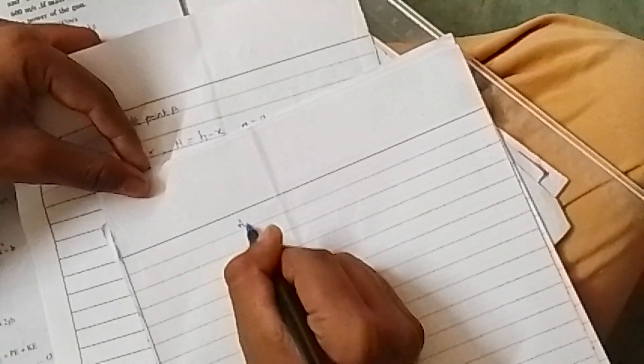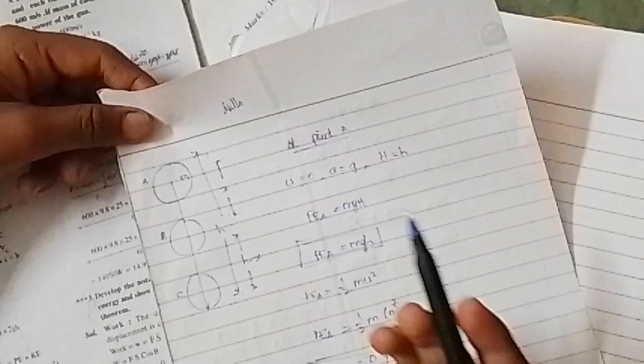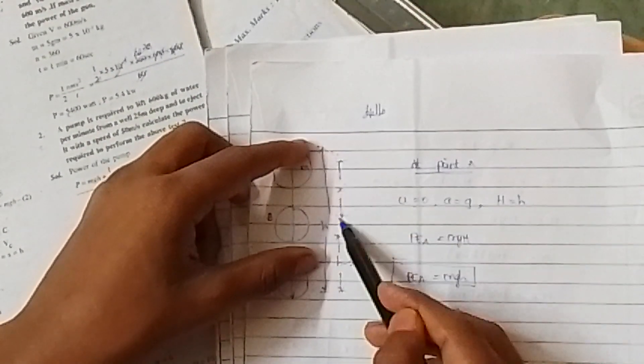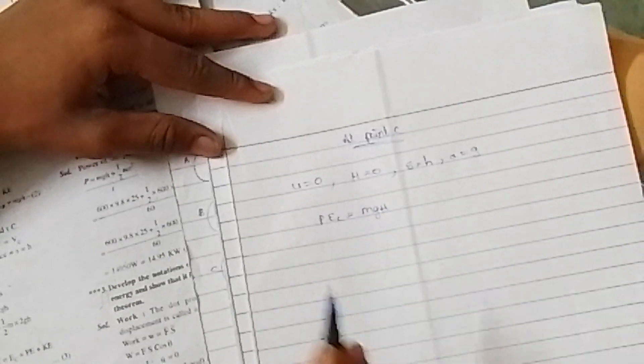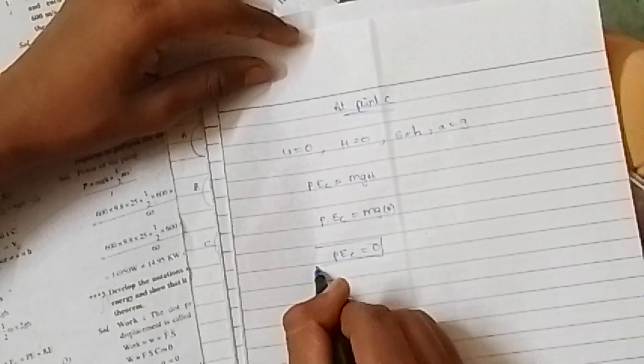Going to point C: at point C, u is always 0 and height is 0, because it has already reached the ground at point C, so it does not have any height now. Displacement is h, because from A to C the total displacement is h. Acceleration a is always g. So potential energy at C is equal to mg into 0, which means potential energy at C is equal to 0.